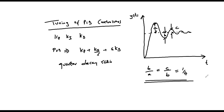Ziegler and Nichols rules are used to select the PID coefficients such that the step response of the resulting system has the quarter decay ratio, which is a satisfactory condition for many control systems. Therefore, in both methods suggested by Ziegler and Nichols, it is envisaged that the step response of the resulting system is going to obey the quarter decay ratio. The two methods are as follows.